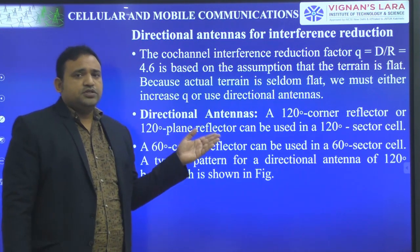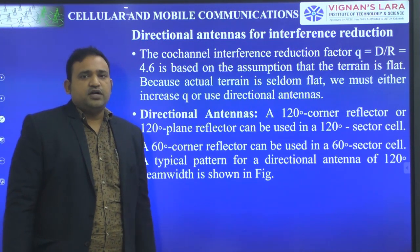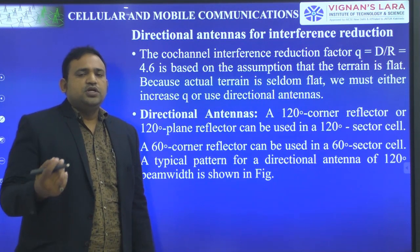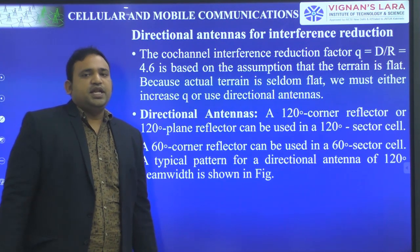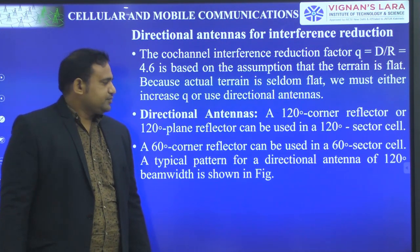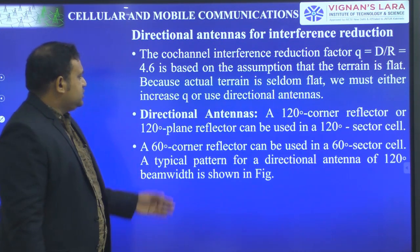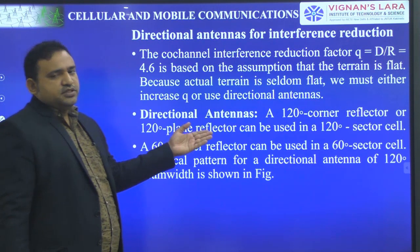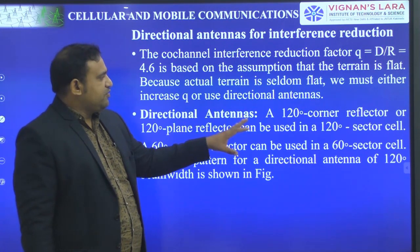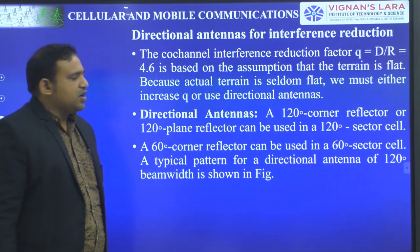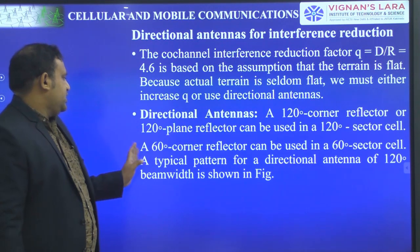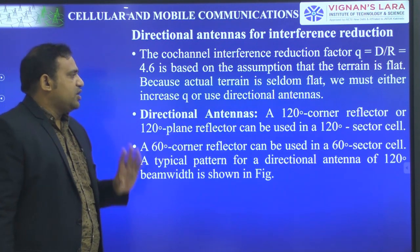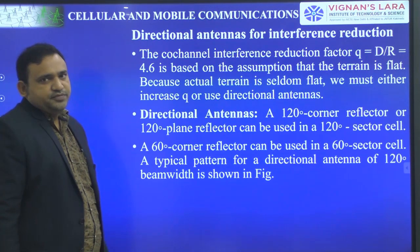We can increase Q — Q means the co-channel reduction factor — or simply we can use a directional antenna. Directional antennas may be a 1-2-1D corner reflector antenna, or it may be a 60-degree corner reflector antenna.